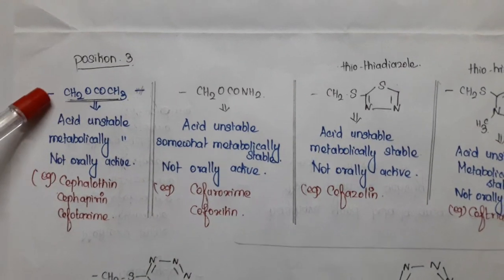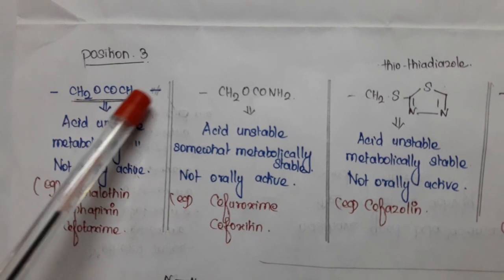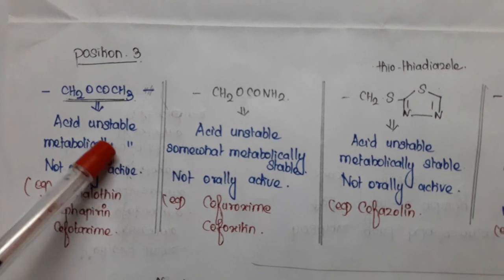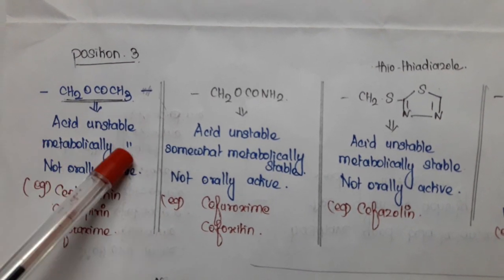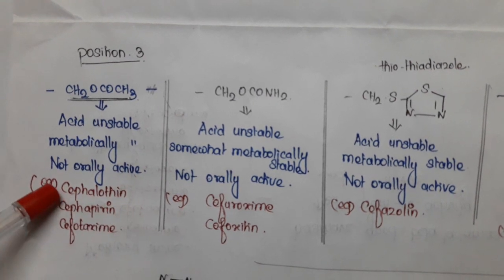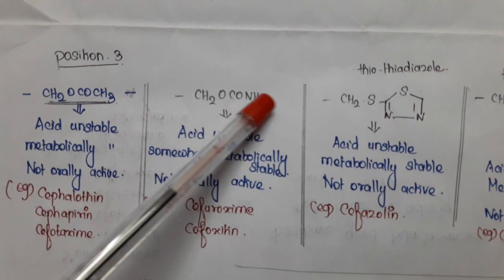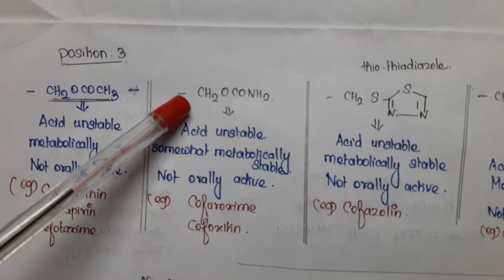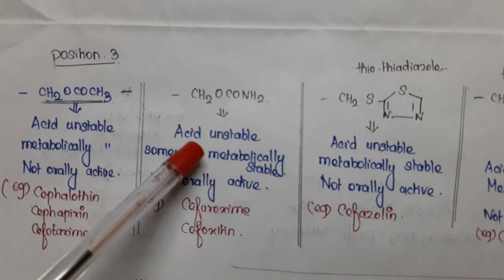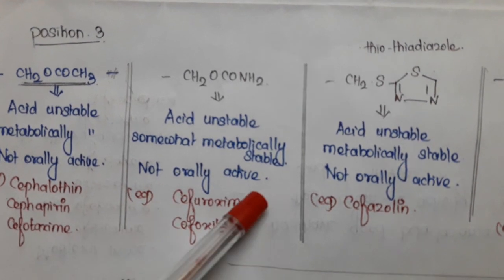If we introduce CH2OCOCH3 — that is acetyloxymethyl — in the third portion, the compound would be acid unstable, metabolically unstable, and not active orally. Examples are cephalothin and related compounds.